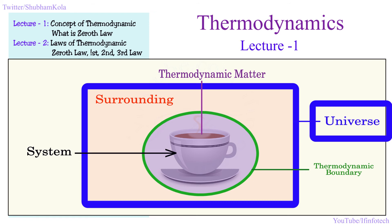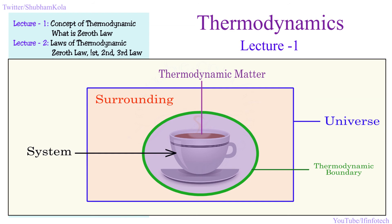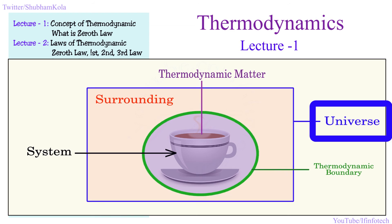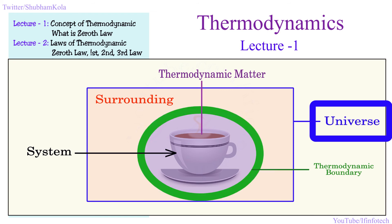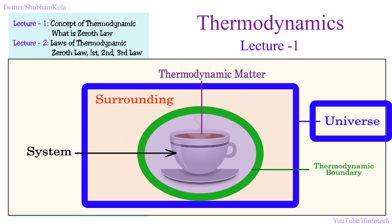Do not misunderstand this with the universe studied in geography, where the entire outer space is the universe — it is not that universe. In thermodynamics, universe means system plus surrounding. The size of the universe depends on the size of the system. The boundary of the universe is hypothetical: it is the limit beyond which heat or mass of the system should not cross.